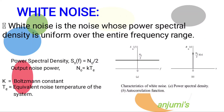White noise is a noise signal which contains all frequencies in equal proportion. White noise is an idealized form of noise. The power spectral density of white noise is N(f) = N₀/2, where output noise power N₀ = K × Te, K is Boltzmann's constant, and Te is the equivalent noise temperature of the system.